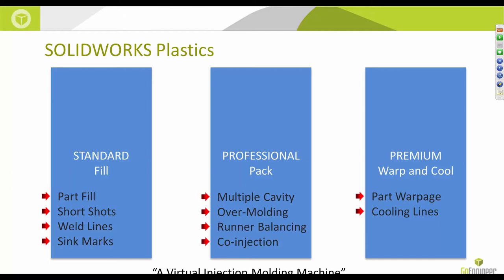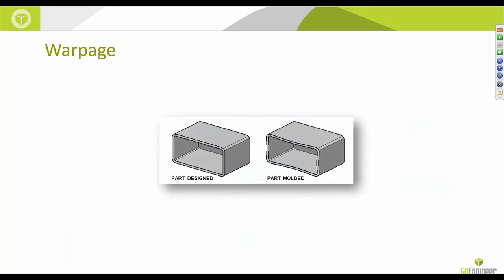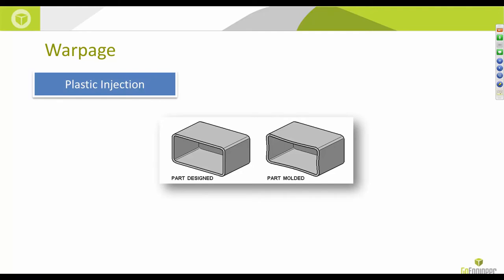Now let's talk about part warpage. Simply put, you design a part to look a certain way and the injection-molded part looks a different way — it doesn't conform to the tolerances prescribed prior to manufacturing. There are many aspects of the injection molding process that cause warpage, from process parameters to part design. I'm highlighting six key factors here.